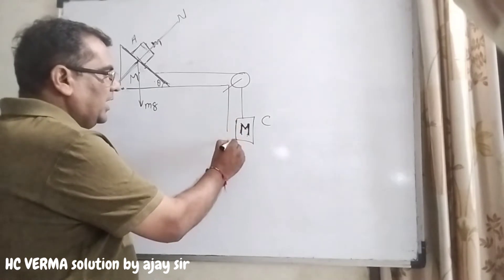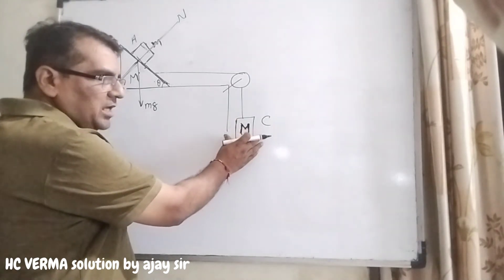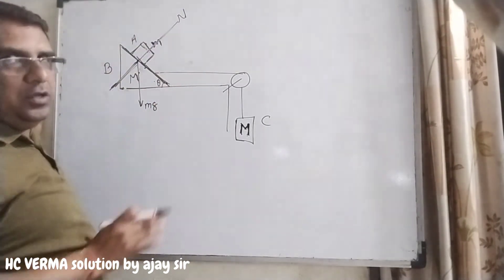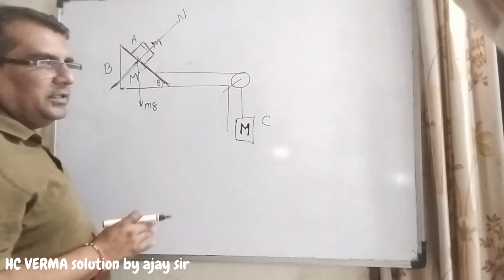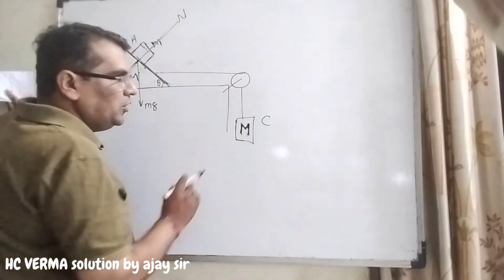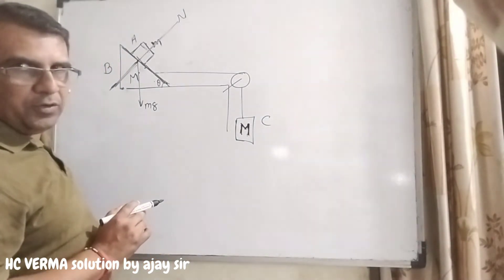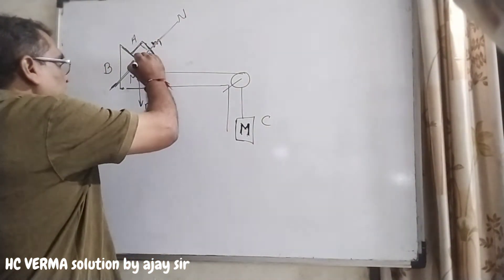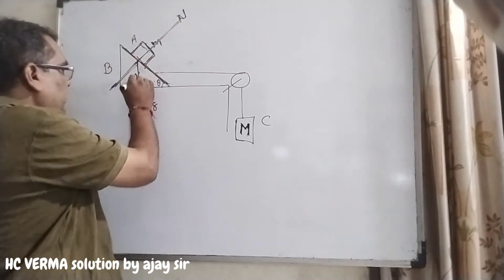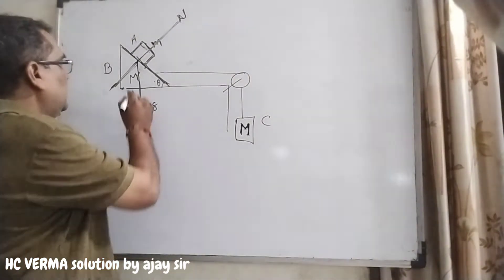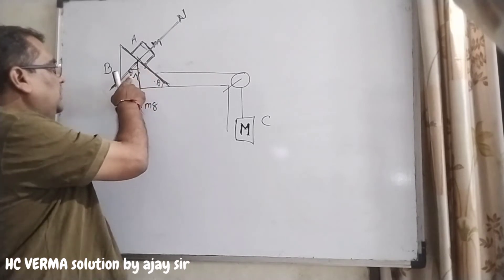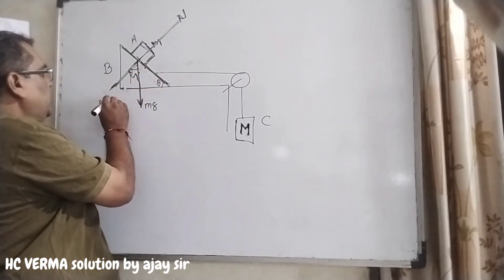Hume sabse pahle yeh bataya gaya hai ki hume block C ka mass nikalna hai, kis condition mein jab yeh block A slip nahi ho raha hai. Toh shuruwaat yahan se karte hain. Yeh triangular block ke upar rakha hai. Normal force surface ke perpendicular hoti hai. Toh block A par normal force yahan rahegi. Mg downward rehta hai, aur yeh theta hai, toh yahan theta banega.